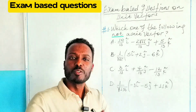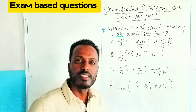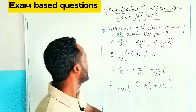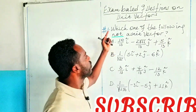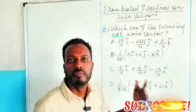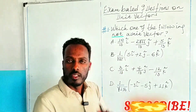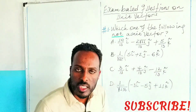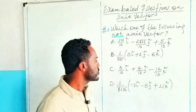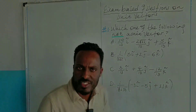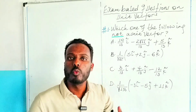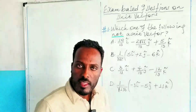I am going to solve an exam-based question to elaborate what is a unit vector. The question is: which one of the following is not a unit vector? We have four alternative choices, so how do we identify the answer?